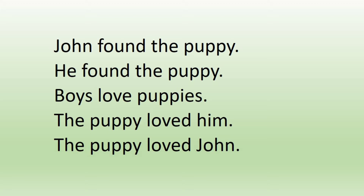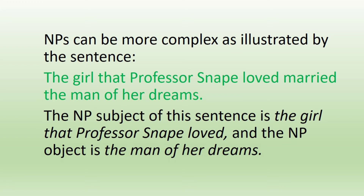Even though a proper noun like John and pronouns such as 'he' and 'him' are single words, they are technically noun phrases or NPs because they pattern like NPs in being able to fill a subject, object, or other NP slots. NPs can be more complex, as illustrated by the sentence: 'The girl that Professor Snape loved married the man of her dreams.' The NP subject is 'the girl that Professor Snape loved,' and the NP object is 'the man of her dreams.'